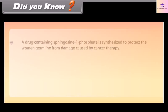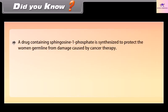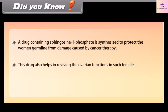Did you know? A drug containing sphingosine-1-phosphate has been synthesized to protect the female germline from damage caused by cancer therapy. This drug also helps in reviving the ovarian functions in such females.